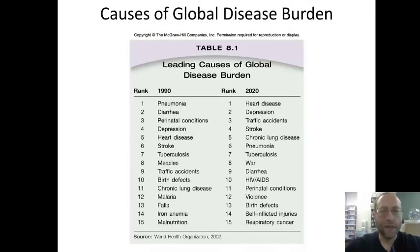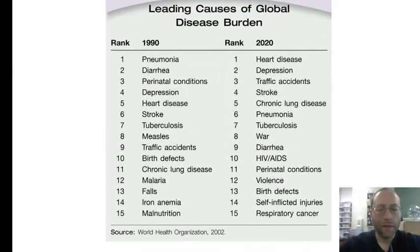We can see here how the disease burdens are changing over time. Back in 1990, the top three were pneumonia, diarrhea, and perinatal conditions. Then in 2020, when many of the least developed countries have made their demographic transition, it shifts to what we see more here in the United States: heart disease, depression, and traffic accidents.